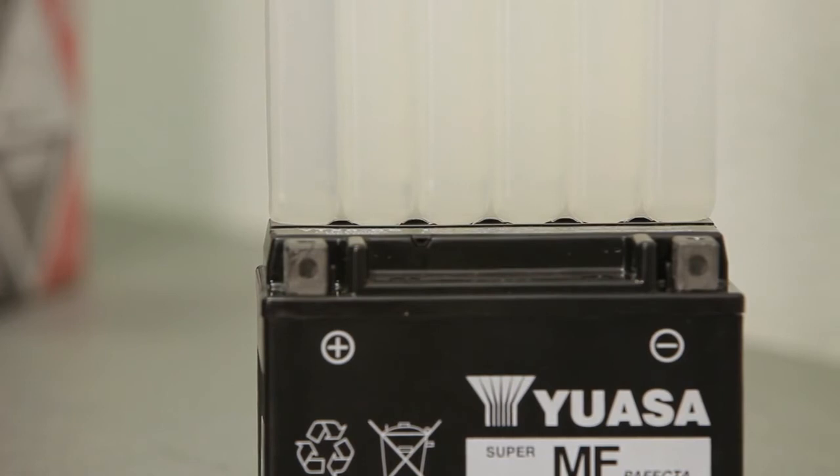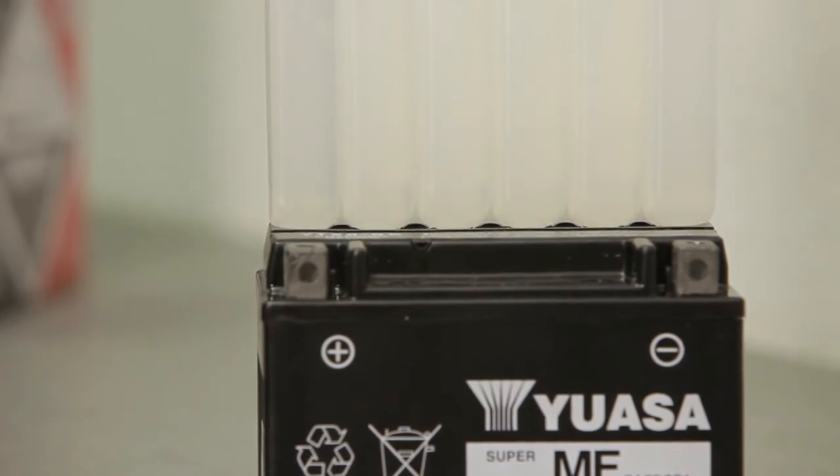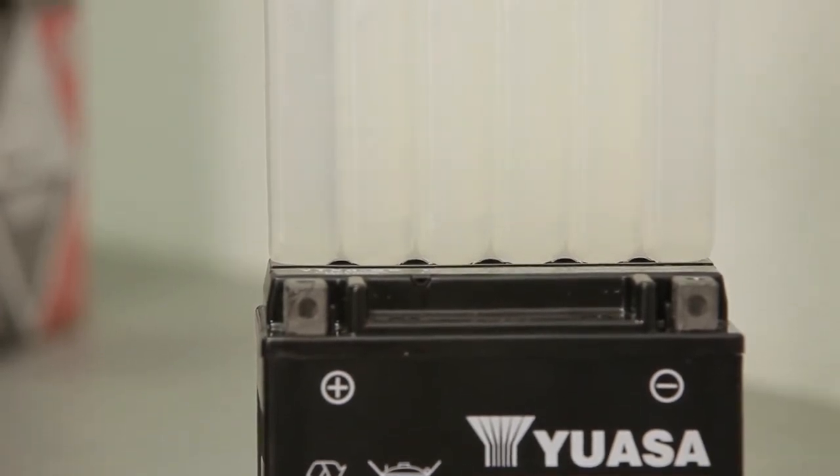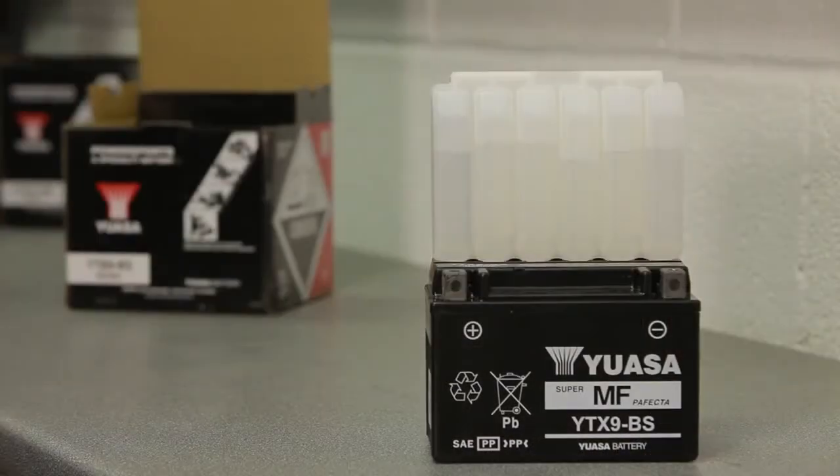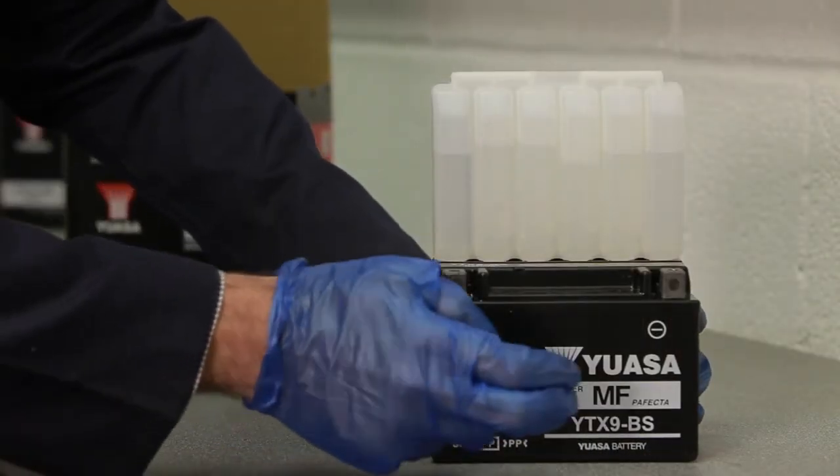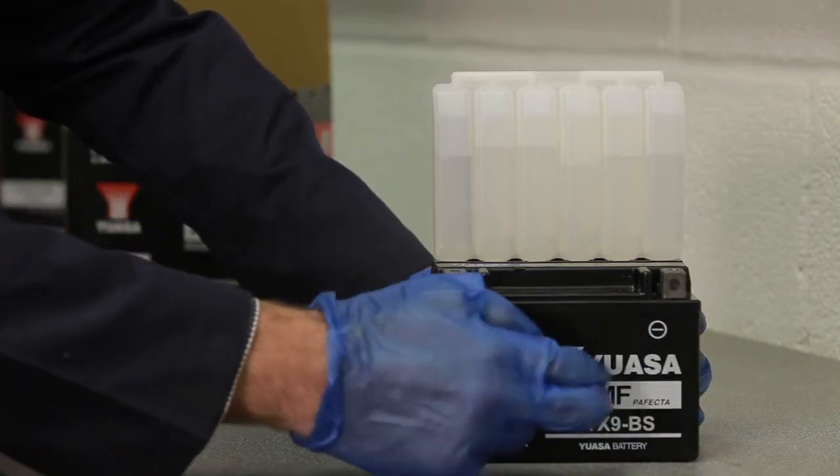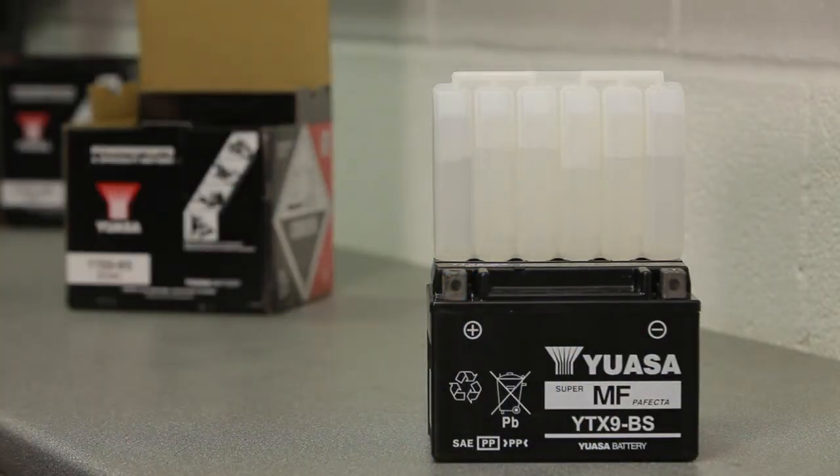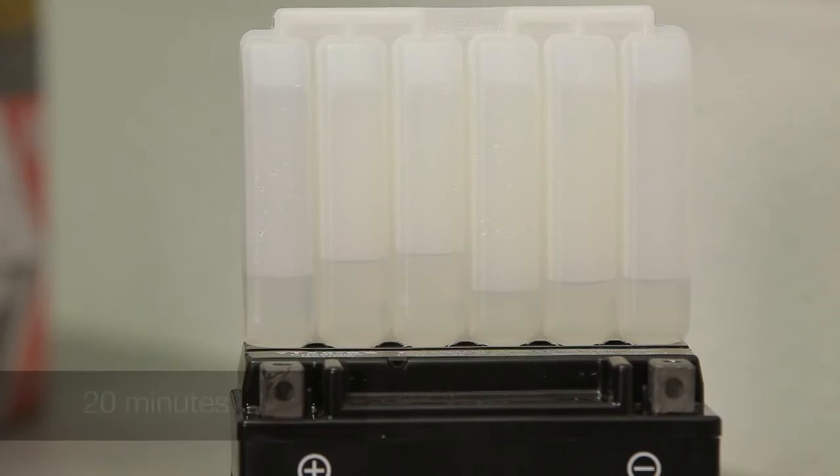Air bubbles should be rising in each of the cells, indicating that the electrolyte is flowing into the battery. If there are no bubbles, tap the container a few times, being careful not to tilt or squeeze it, as this may cause the cells to fill unevenly. Keep the container in place for a minimum of 20 minutes.